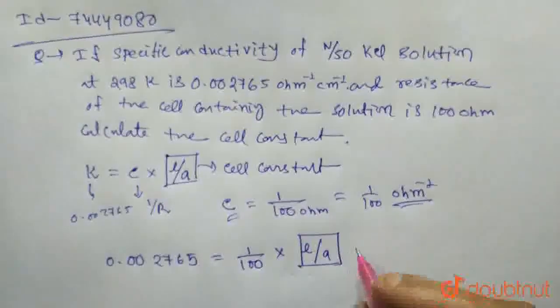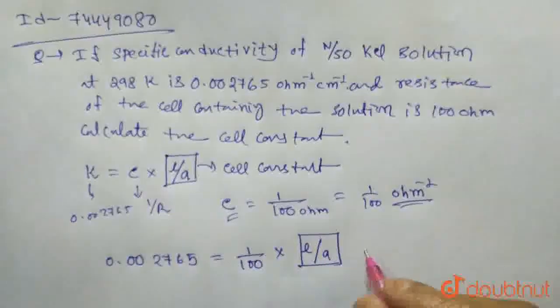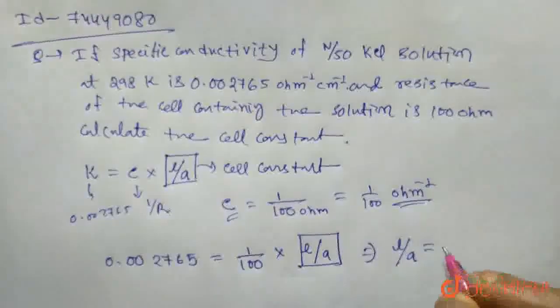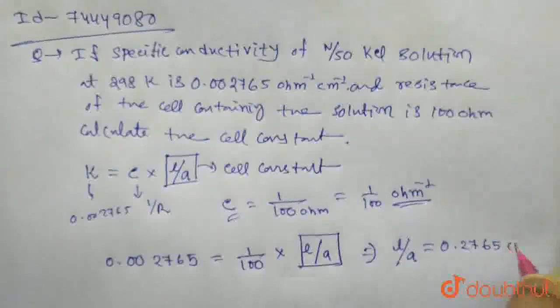To find the cell constant, multiply kappa by 100. Therefore, L by A equals 0.002765 times 100, which equals 0.2765 cm inverse.